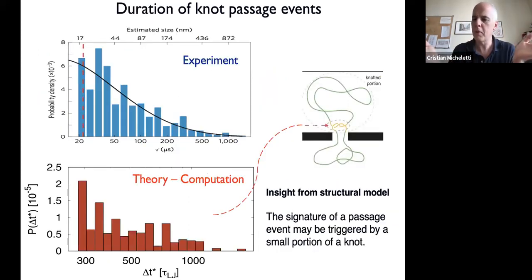This is what causes the late passage events. Not only that, but what about the size of the knots? We find out that in about half of the cases, the knots were not tight at all. The knots were actually occupying the whole region in the cis side before translocation.